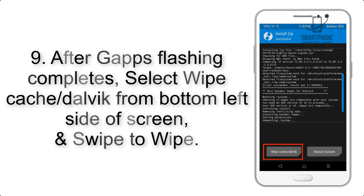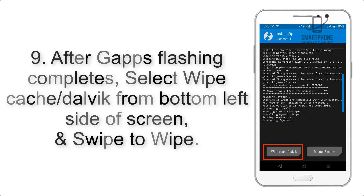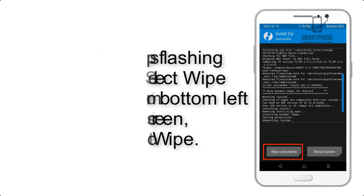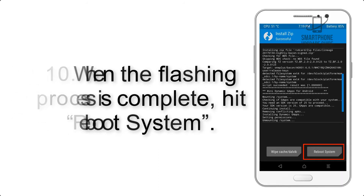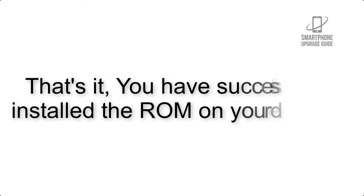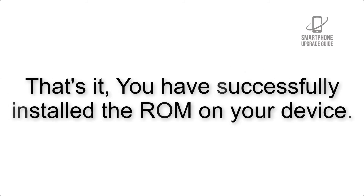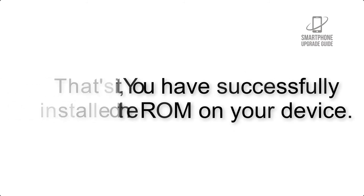Step 8: Flash the GApps zip package in the same manner. Step 9: After GApps flashing completes, select Wipe Cache and Dalvik from the bottom left side of the screen and swipe to wipe. Step 10: When the flashing process is complete, hit Reboot System. That's it — you have successfully installed the ROM on your device.